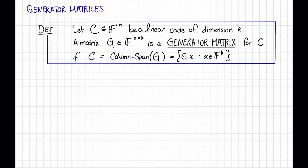So the picture looks like this. G is a tall and skinny matrix. It's n by k. We multiply it by our message x, also of length k, and what we're going to get is a codeword C of length n.